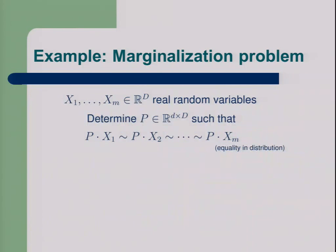Hopefully you will grasp the ideas I used in our paper. As an example, let us consider a marginalization problem, which is related to LDA. We start with M real random variables in big D space, or you can think of it, we start with samples from them, and now we want to determine a projection such that for those data sets, samples from these random variables, they look similar.